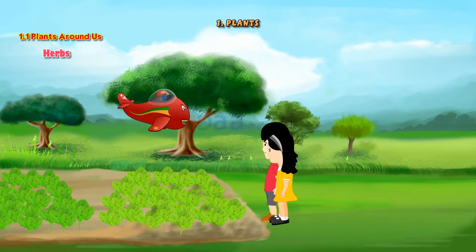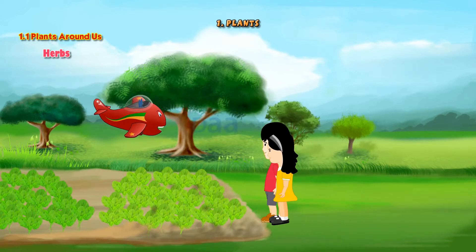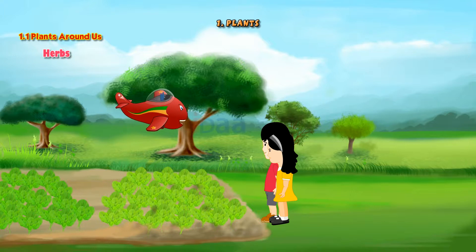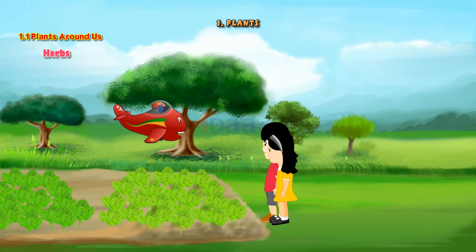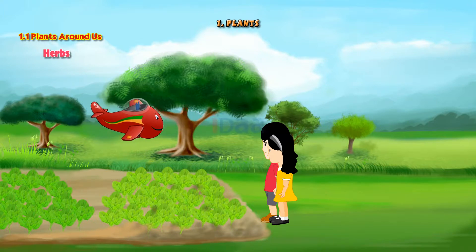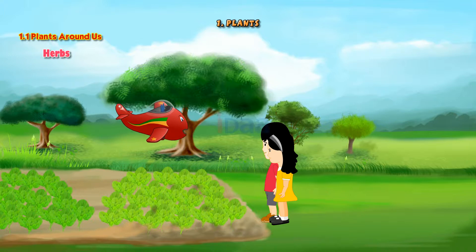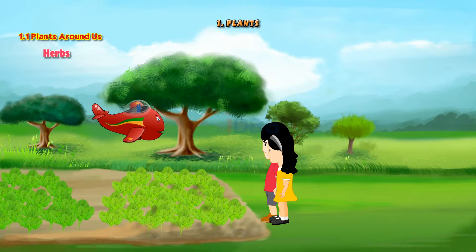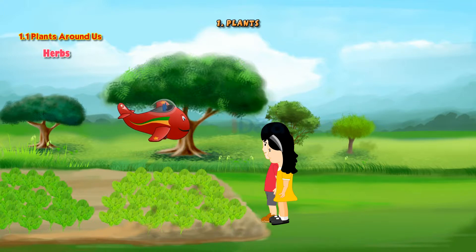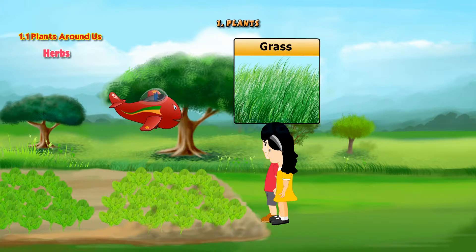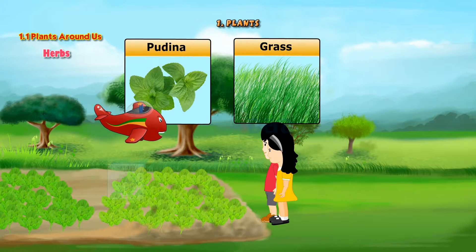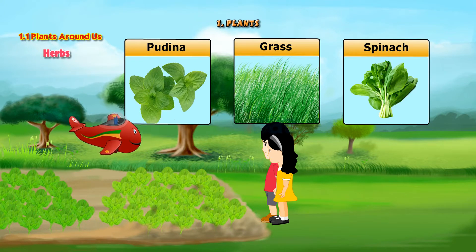There are types of plants which are very small. These are called herbs. Let us move forward to learn about them. Herbs are very small and they cannot stand erect. Examples of herbs are grass, pudina and spinach.